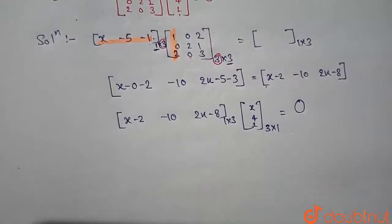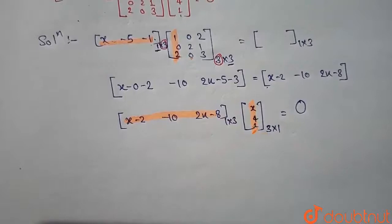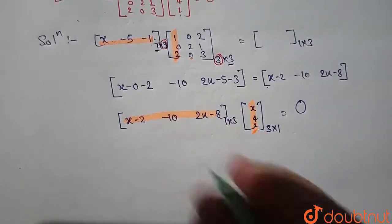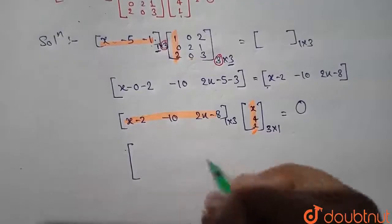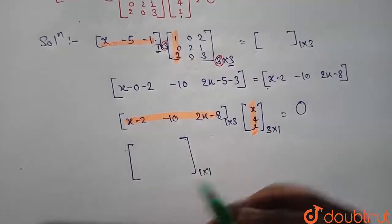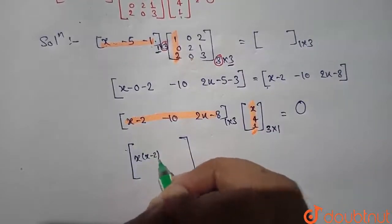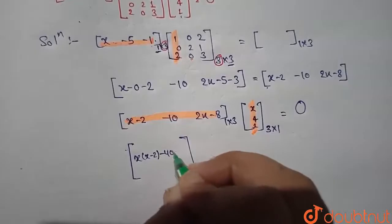Now we will multiply this into this manner, that is this and this. Then the final product will be 1 by 1 order: x(x-2) - 40 + (2x-8) = 0.